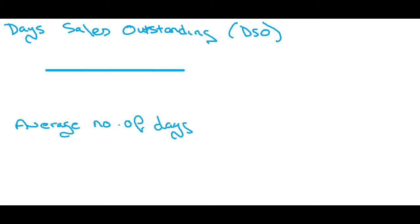So let's have a look at days sales outstanding, otherwise known as DSO. This is simply the average number of days that receivables remain outstanding before collection.